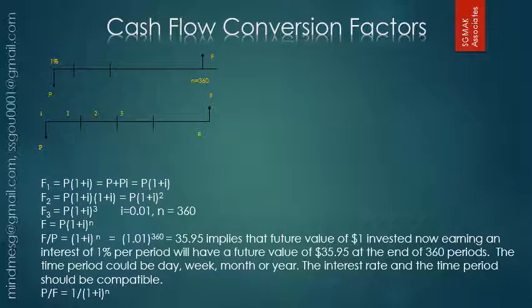This is a simple cash flow diagram which shows that we are trying to relate present value to future value. We have assumed a one percent interest rate per period and have taken 360 time periods. The future value after one time period is principal plus interest, which is P times (1 + i). After two time periods it is P times (1 + i) squared.